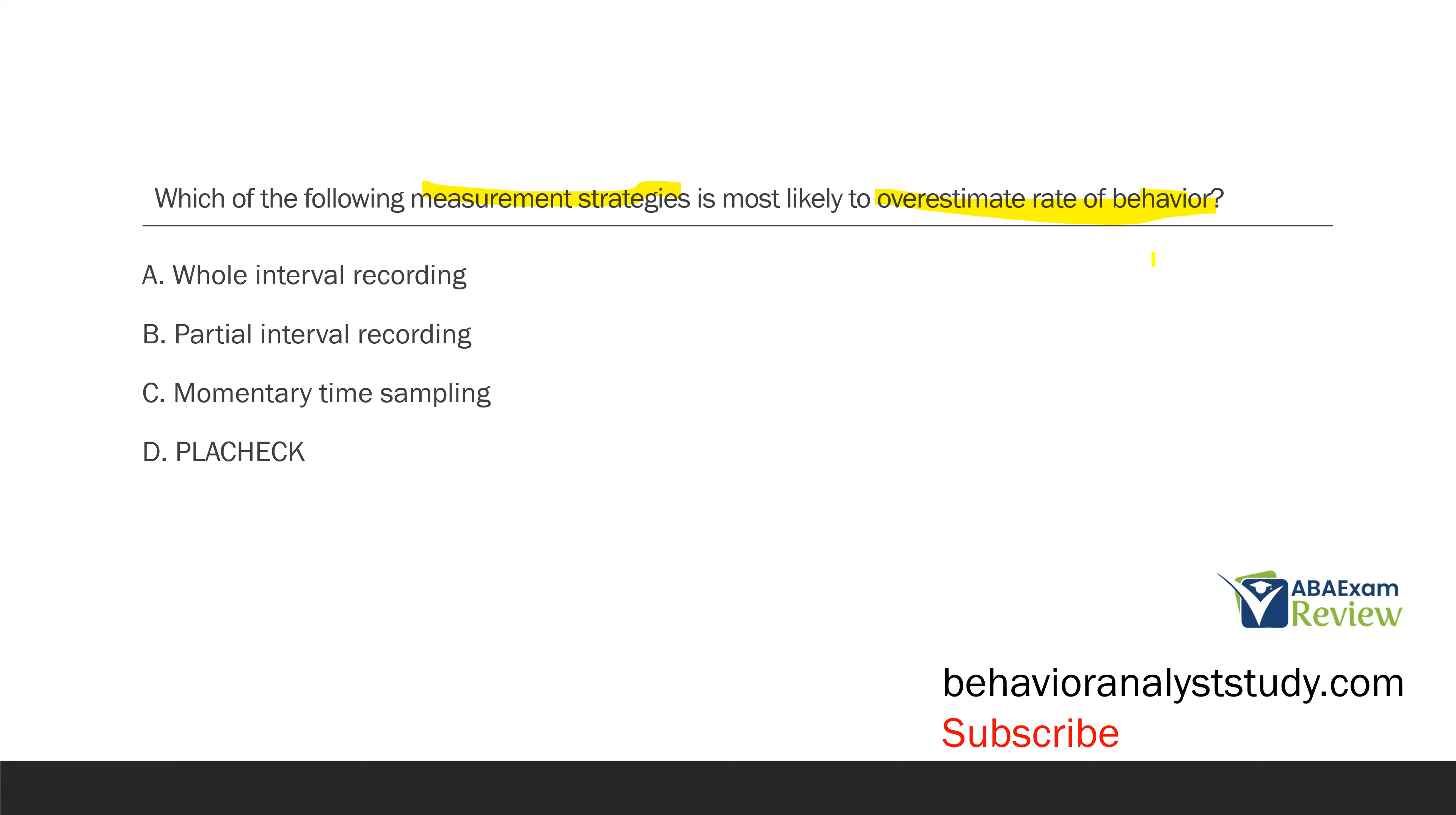Partial interval, however, tends to overestimate because if that behavior happens for a split second in a 20-second interval, data are going to show it happened the whole time. So, partial interval really overestimates rate of behavior. Momentary time sampling and PLACHECK, same idea because PLACHECK is the group version. You can't really predict if you're going to overestimate or underestimate with momentary because it's at the end of each interval, right? So, it could be either or. The one that is most likely to overestimate rate is going to be partial interval recording.